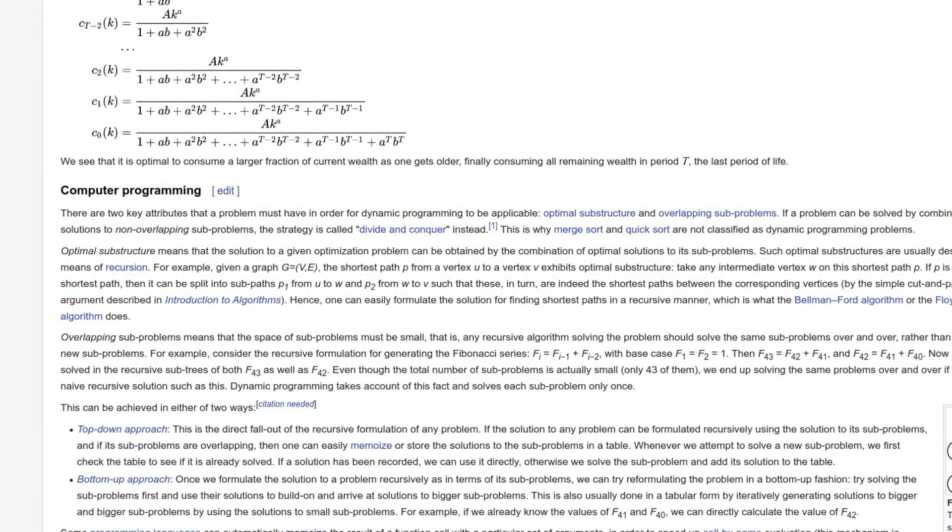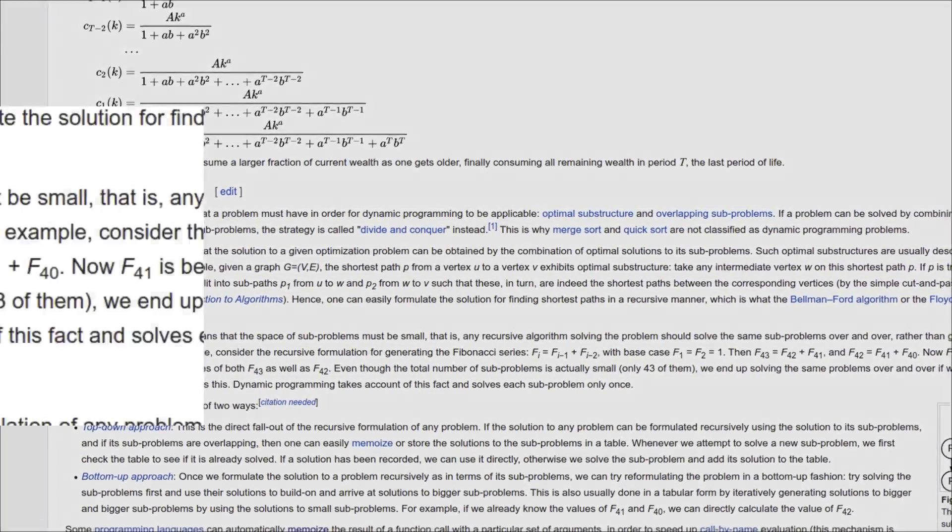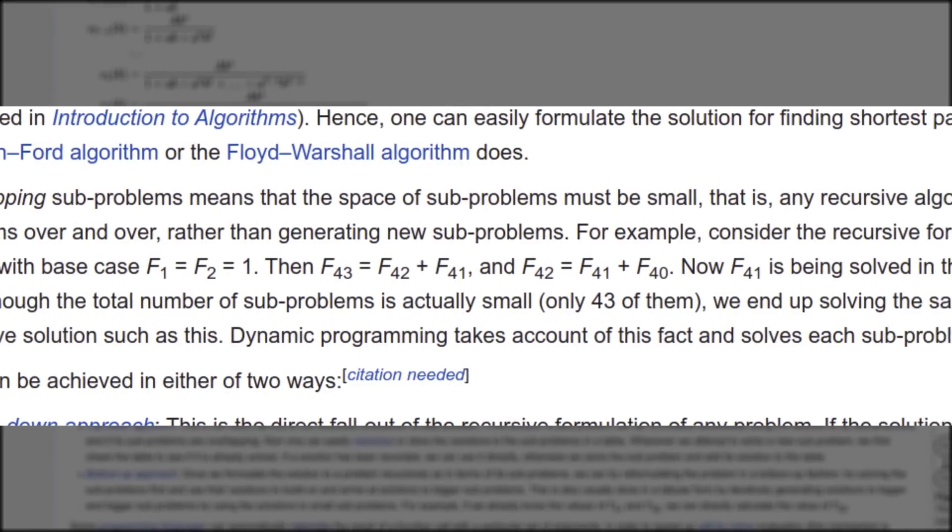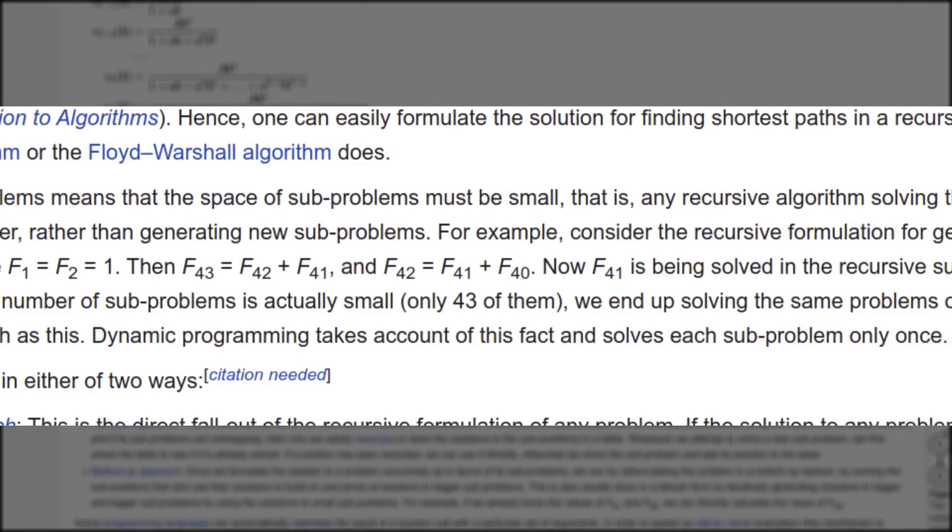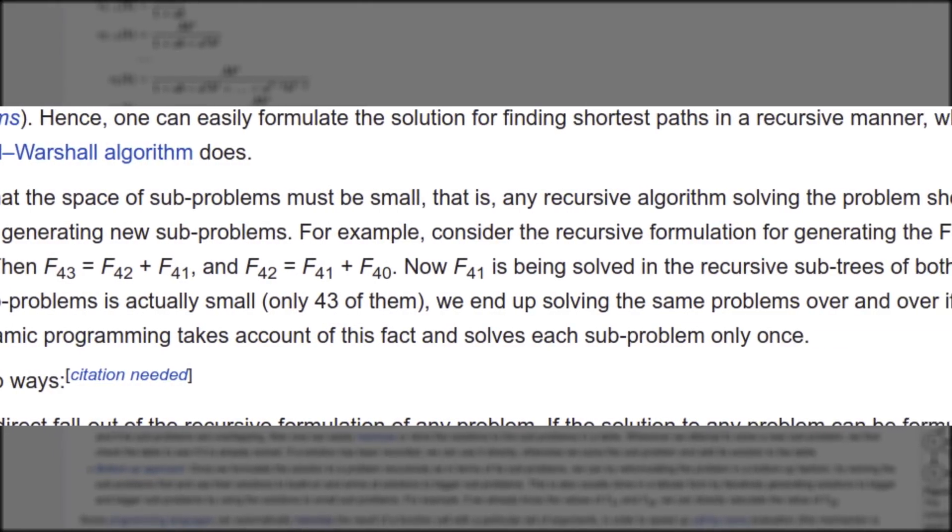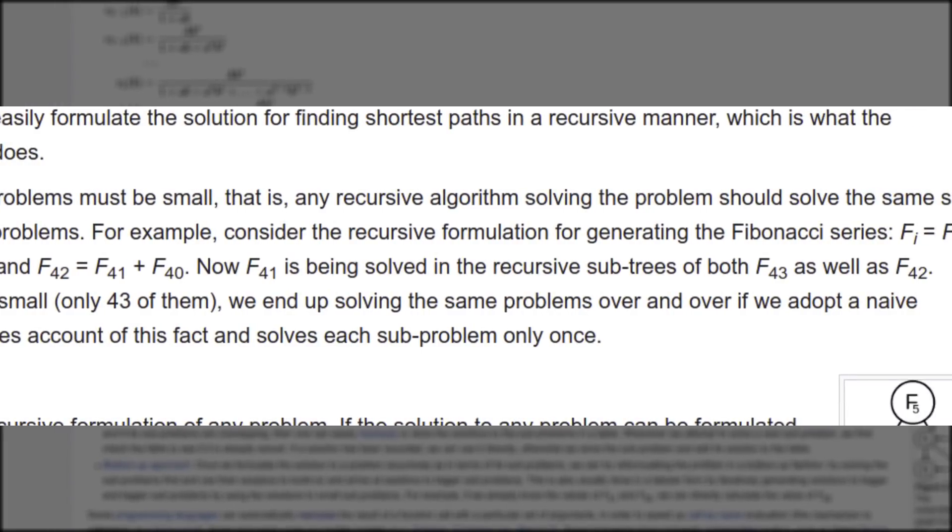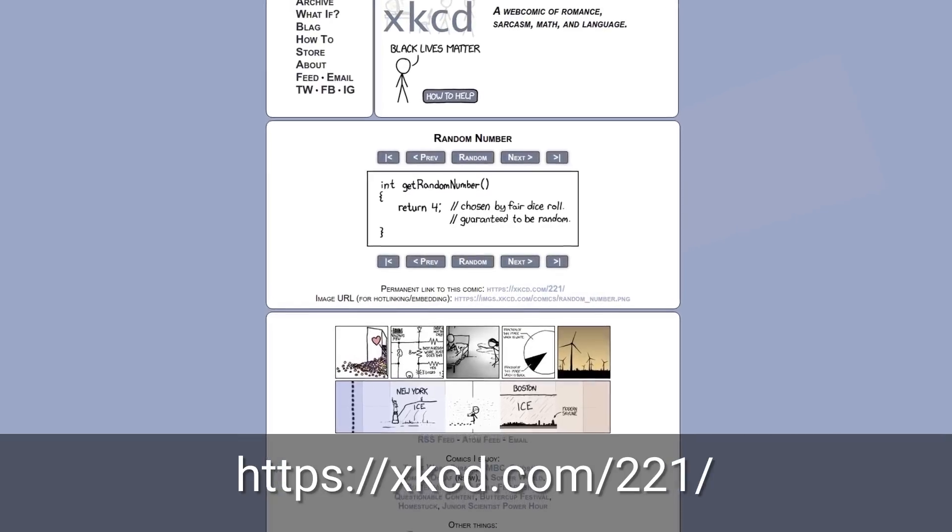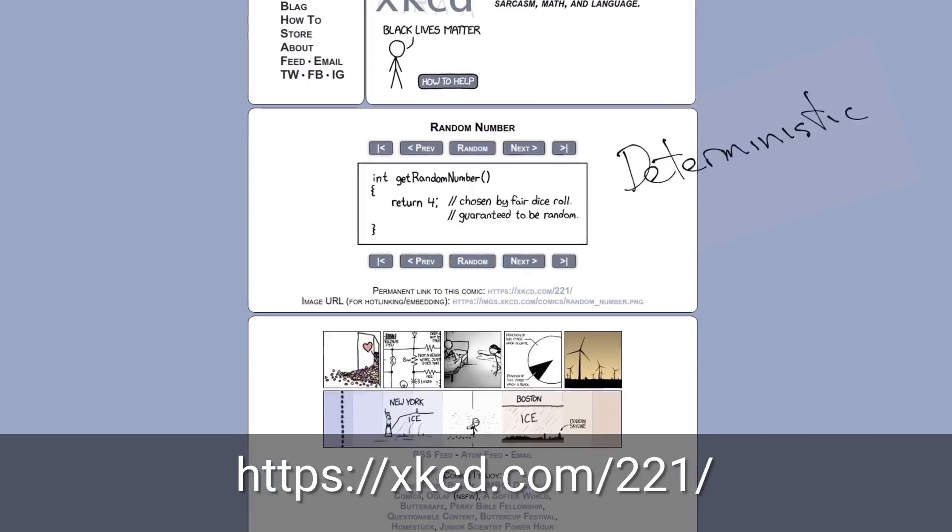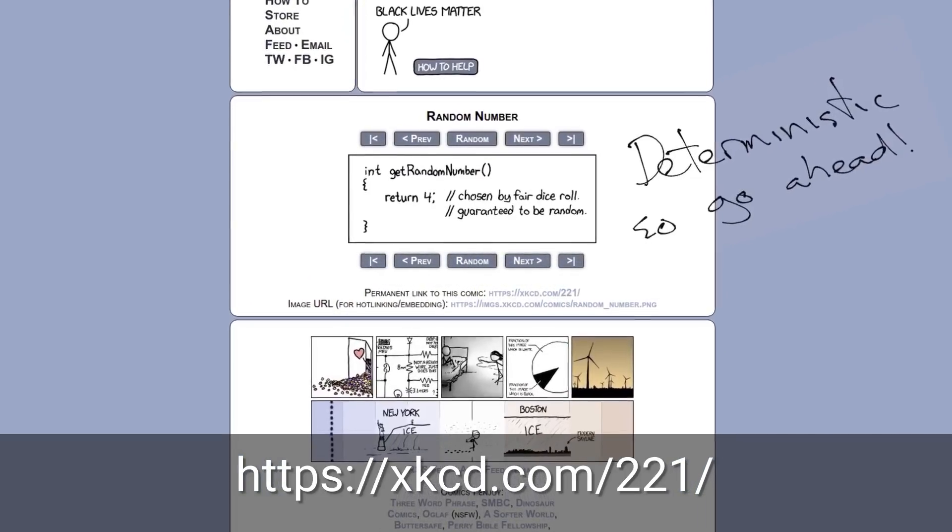So, the second prerequisite for dynamic programming to be applicable, having overlapping sub-problems. And all that means is that when you're solving the problem, you're doing a lot of redundant work, solving the same problems over and over again. And, of course, those sub-problems that are getting redone, they have to be deterministic, otherwise you just can't save the result.